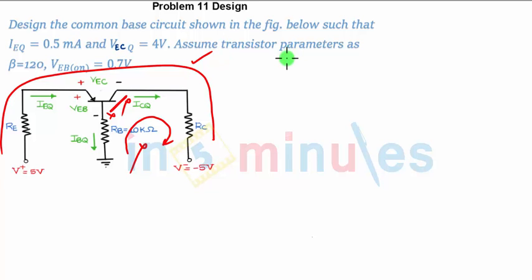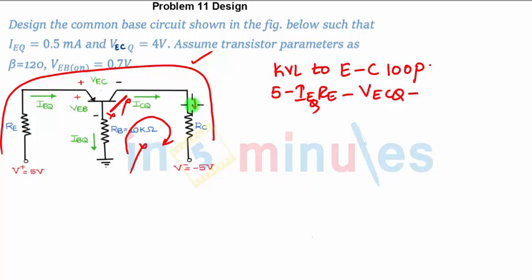What will be the equation? KVL to emitter-collector loop: equation will be 5 minus IE·RE minus VECQ, or you can say ICQ·RE minus current flowing through RC, which is ICQ into RC plus 5 equals zero. I have started from this point and I am ending till minus 5 volts.